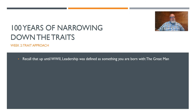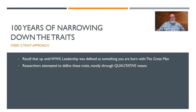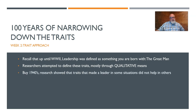Researchers started attempting to define these traits because it's useful to know what they are so you can identify people who have them, mostly through qualitative means. Qualitative research is basically through storytelling — gathering stories from people, like interviews. Asking 'what makes a great leader?' and noting common answers is a qualitative approach. The other side is quantitative research, where you study actual numbers. Qualitative means listening to people and finding common points in their stories.